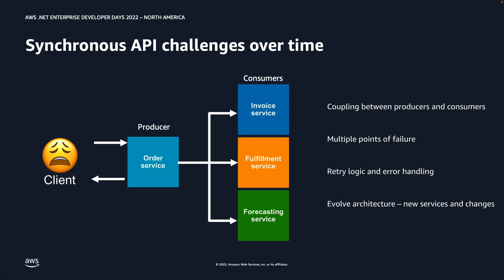Secondly, it introduces multiple points of failure. For example, if there was a bug or an error in the forecasting service, since the order service is acting as an orchestrator, any errors in the forecasting service will cause the entire workflow to fail. Thirdly, we need to build intelligence in terms of retry logic and error handling in the order service — for instance, if the forecasting service did not return a successful response, the order service needs to handle that error and subsequently retry.